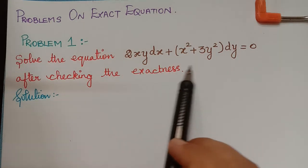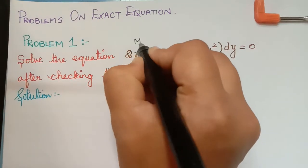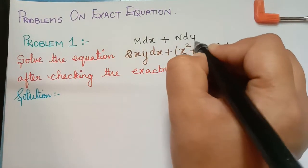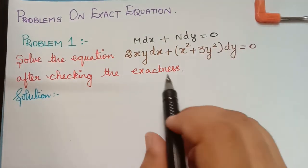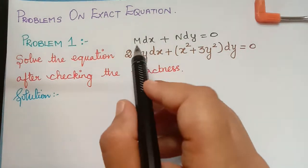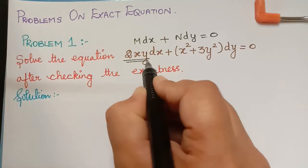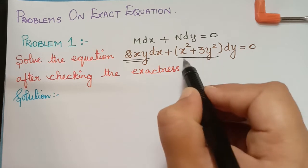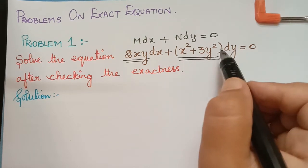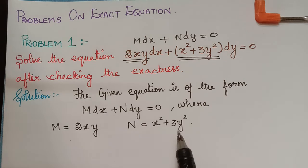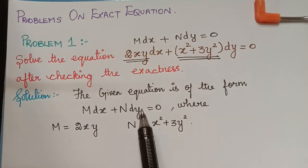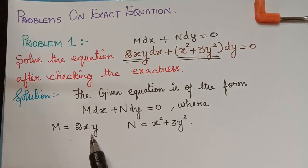This given equation is of the form M dx plus N dy equals 0, where M is equal to 2xy and N is equal to x squared plus 3y squared.